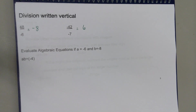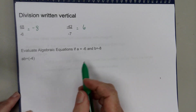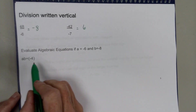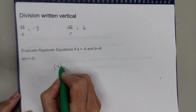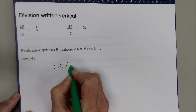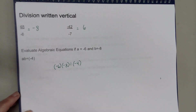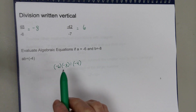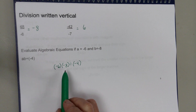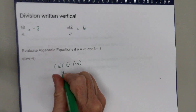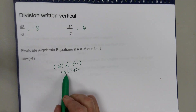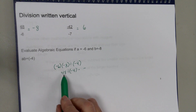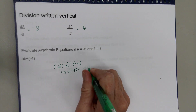The other thing in this section is evaluating algebraic equations, which means substituting numbers in for the letters. So with a times b divided by negative 4, where a equals negative 6 and b equals negative 8: substituting gives negative 6 times negative 8 divided by negative 4. Everything is multiplication or division, so work left to right. Negative 6 times negative 8 gives positive 48 — signs are the same. Then 48 divided by negative 4: signs are different, so the answer is negative 12.